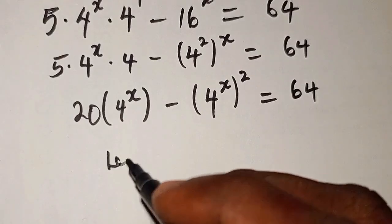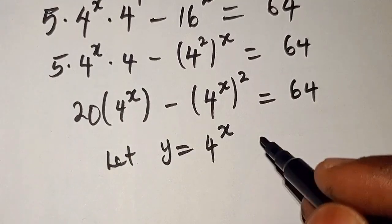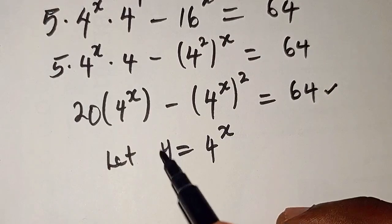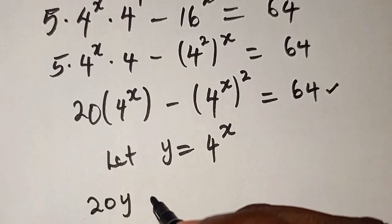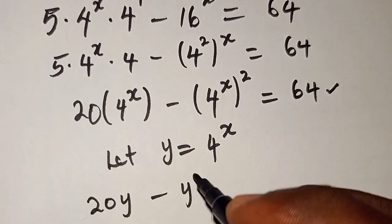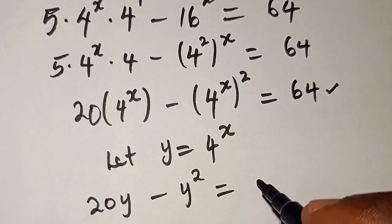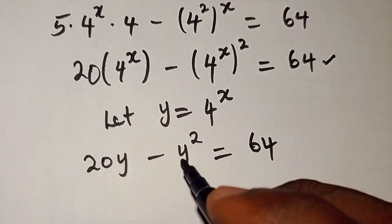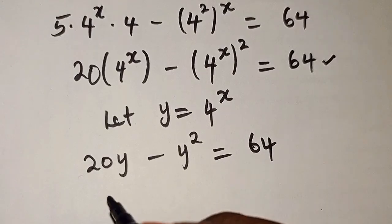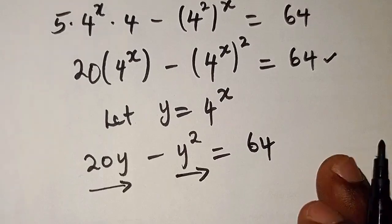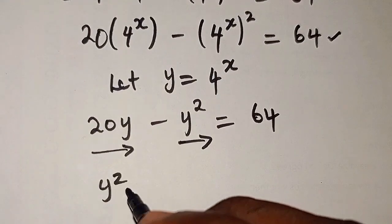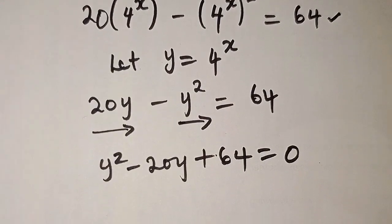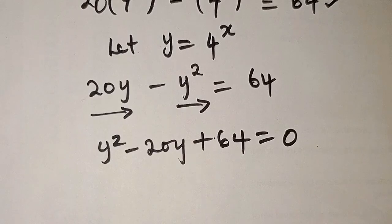So now from there, let y equal 4 to the power of x. Therefore, anywhere we see 4 to the power of x in this equation, we're going to replace it by y. So we're going to have 20y minus y squared equals 64. I can rearrange this equation, taking everything to the right hand side, giving us y squared minus 20y plus 64 equals 0. We now have a quadratic equation in terms of y.